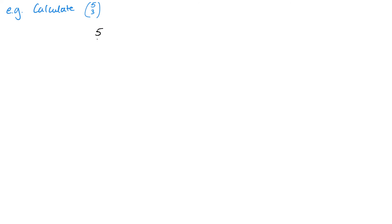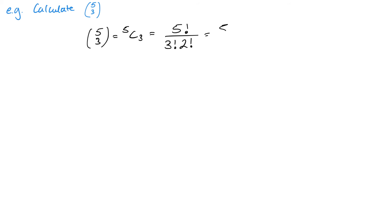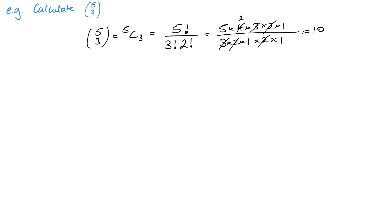If I see it in this form, it means 5 choose 3. So it's 5 factorial on top, 3 factorial on the bottom, and the other factor makes it up to that top number — these two will always total the top one. We've got 5 times 4 times 3 times 2 times 1 on top, and 3 times 2 times 1 times 2 times 1 on the bottom. I can cancel the twos, cancel the three, cancel this two with the two in the four — and that just leaves me with 10 in total.